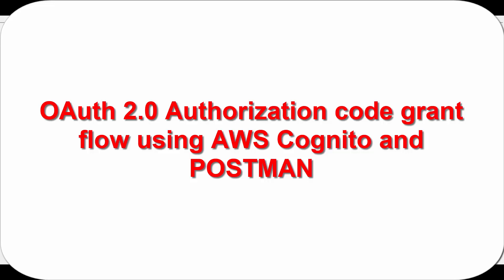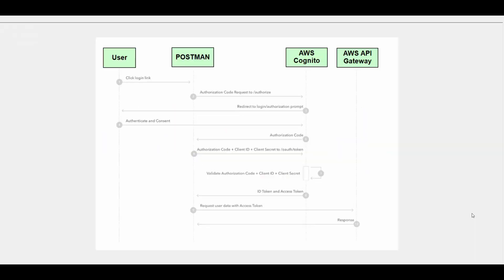Hello friends, welcome to this session. Today you'll see how authorization code grant flow works and how this can be implemented using AWS Cognito, and you can test it using Postman. In this diagram it shows a flow for authorization code grant flow. You can see here the user will use Postman and will try to access our API endpoints which are exposed by AWS API Gateway, but before doing that it will be authenticated and authorized using AWS Cognito, which will act as our identity provider.